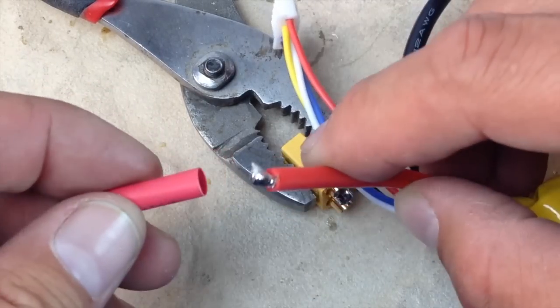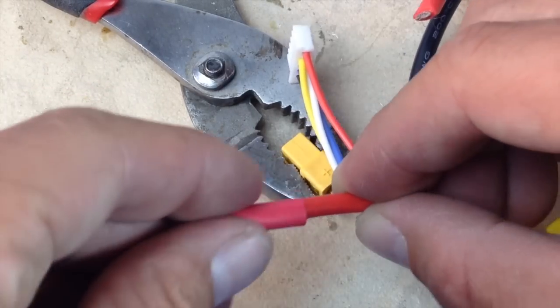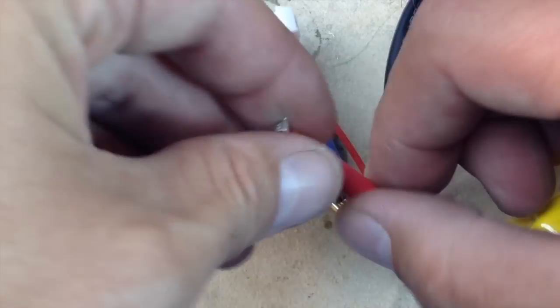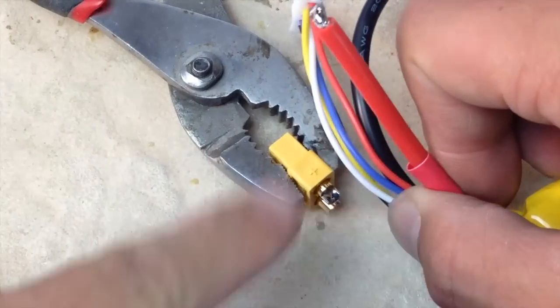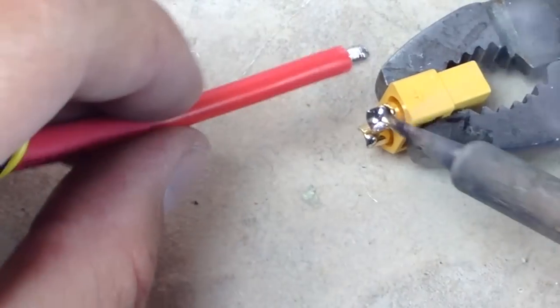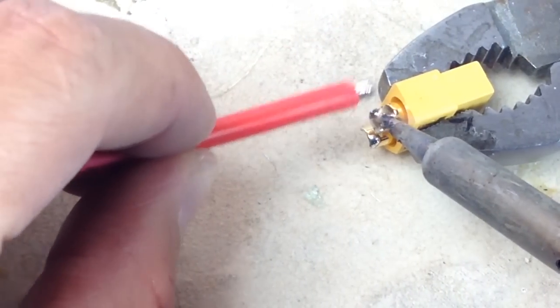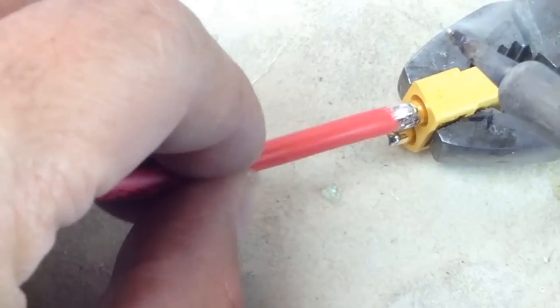Okay guys, let's go ahead and put our heat shrink tubing over the red lead here. I'm going to make sure that my positive is up and it is. I'm going to go ahead and heat up this just a smidge, get that melting, and we'll get these two guys here.